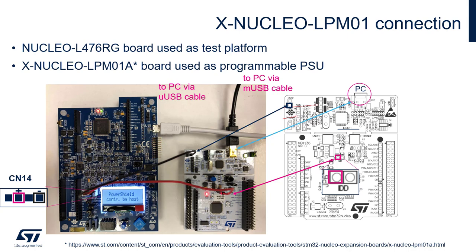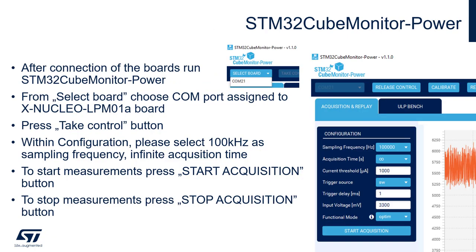On the next slide I will present how to configure the application cooperating with the XNucleo board. This application is STM32CubeMonitor Power, which should be installed on your PC. Once you run the STM32CubeMonitor Power application, before connecting both boards to PC, you should see the possibility of selecting the board. There is a 'Connect Select Board' field. If you press on it, you should see available COM ports detected by the application. Please select the COM port assigned to XNucleo LPM01A board — in our example it is COM21. Then please press the Take Control button.